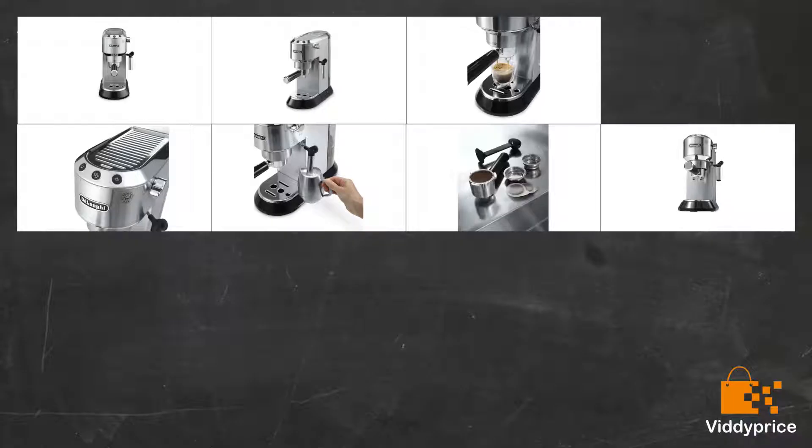Leaked all over the worktop from day one for no obvious reason. Returned as faulty and we'll see if replacement does the same thing. Update: The replacement machine does not leak and makes fantastic coffee. I clearly just got a dud one first time round. Worth the hassle of returning machine number one because this one is fab. Didn't give 5 stars because of quality of first machine.